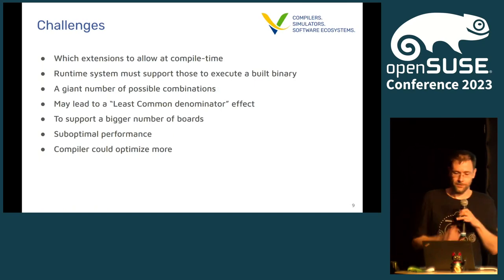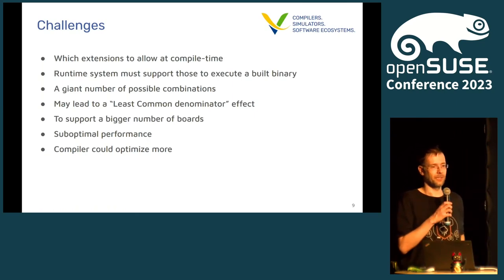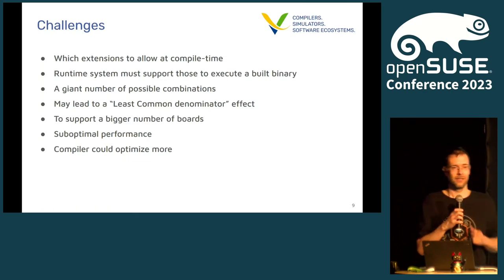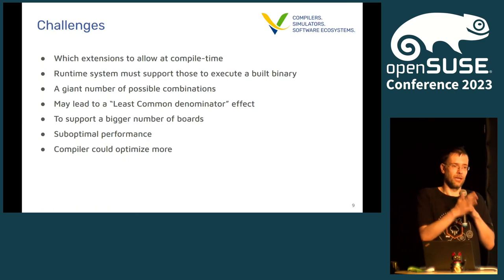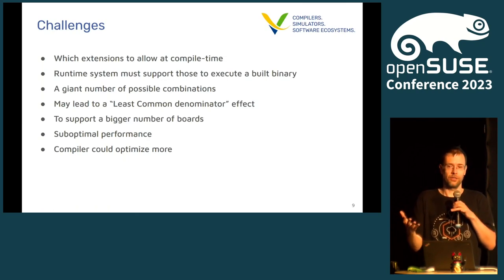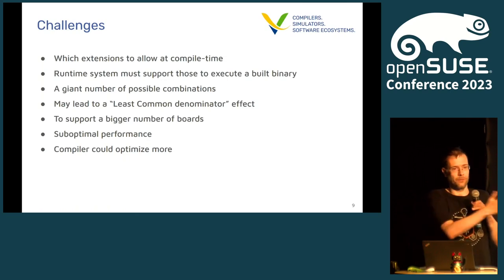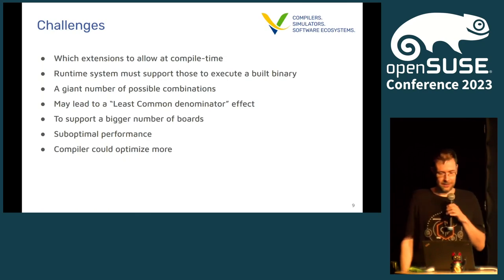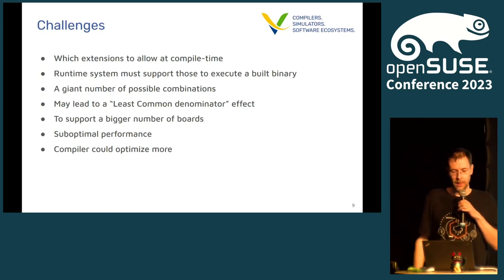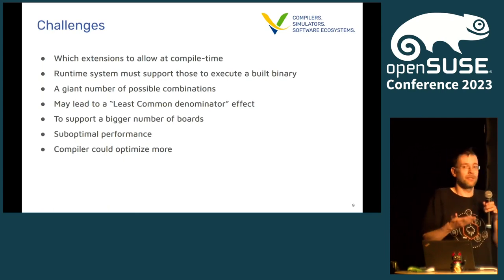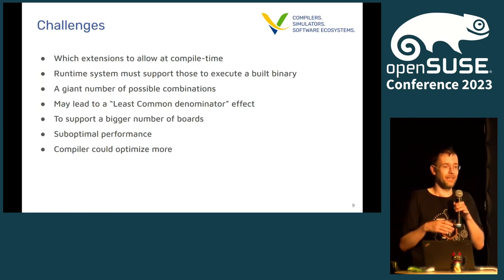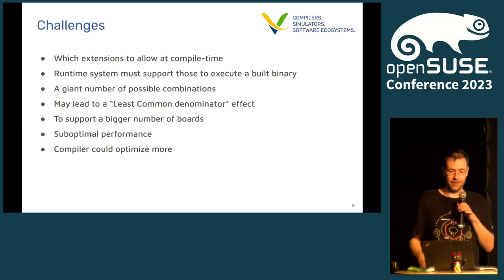This brings a number of interesting challenges for the software system. When you're compiling a program, you're always compiling it for a specific set of instructions — which extensions are you allowing at compile time, which then also need to be present on the running system? Because when you execute an instruction that isn't supported, you'll get a program abort. This leads to a giant number of possible combinations, and for general distributions the main issue is that it will most likely lead to a least common denominator effect.